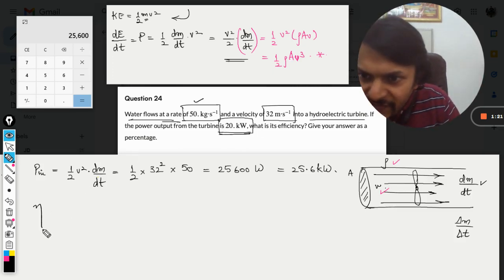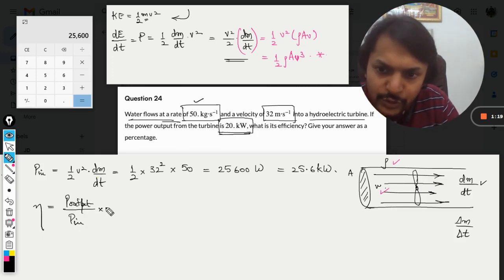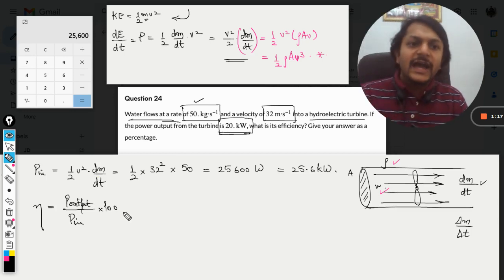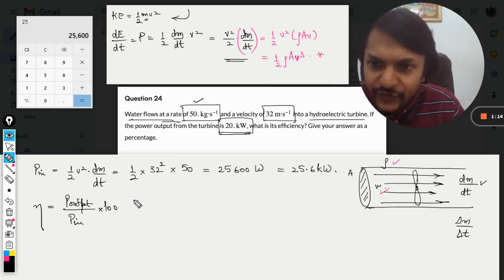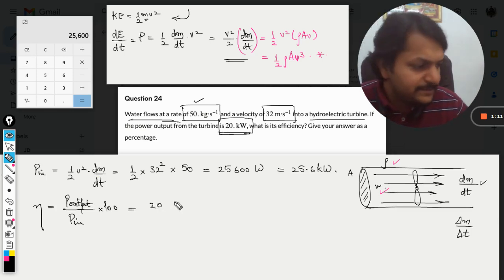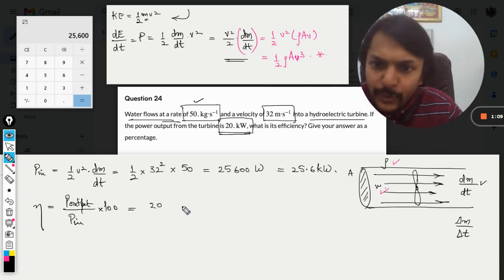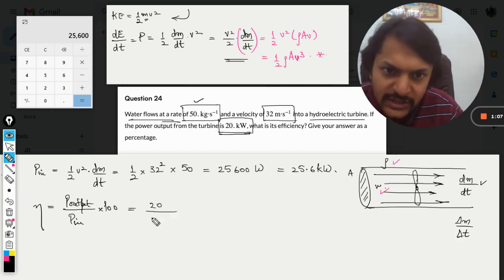What is the efficiency now? We know the efficiency formula is power output divided by power input times 100. The power output is 20 kilowatt, and the power input is 25.6 kilowatt. The units in the numerator and denominator are the same, so we need not multiply by thousand.